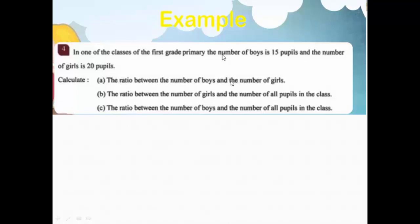The ratio between boys and girls means boys first, then girls. The number of boys is 15 and the number of girls is 20. The total number of people in the class equals 15 plus 20, which equals 35.